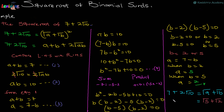So the square root of 7 + 2√10 equals √5 + √2. I believe you're able to follow the way I solved this. You can replay it to understand how to find the square root of binomial surds. More examples will be coming soon — just stay tuned, thank you.